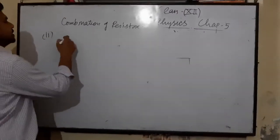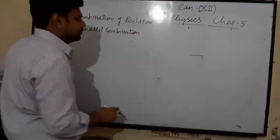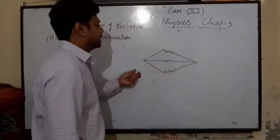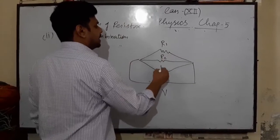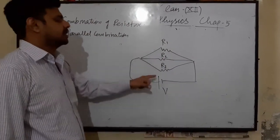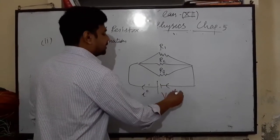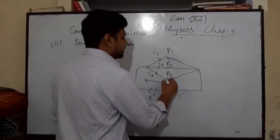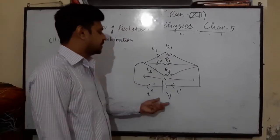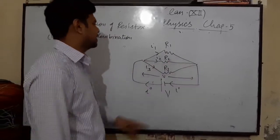Now the second combination is parallel combination. Consider three resistors connected in parallel by a battery of potential difference V. In parallel combination, the current in each resistor will be different, but the potential difference across the ends of each resistor will be the same as the potential difference across the terminals of the battery, because all resistors are connected across the same ends.